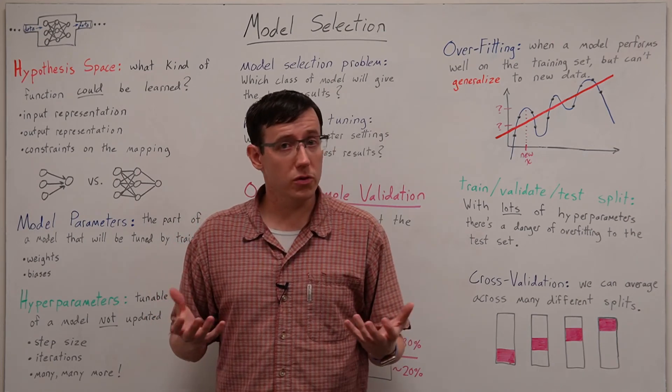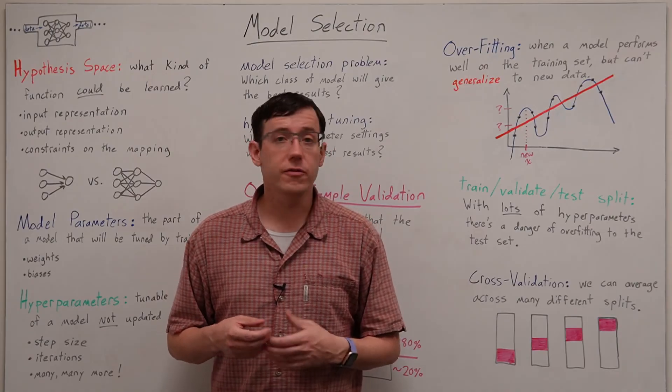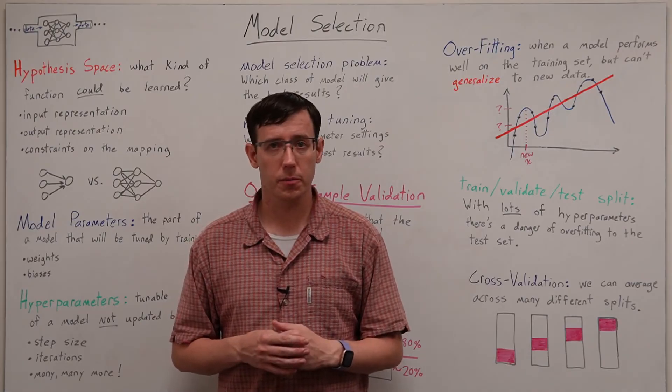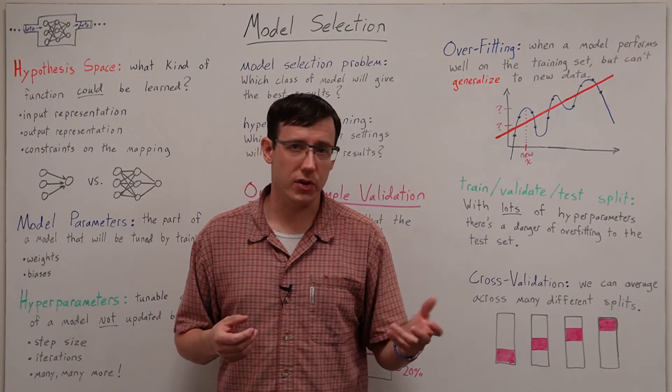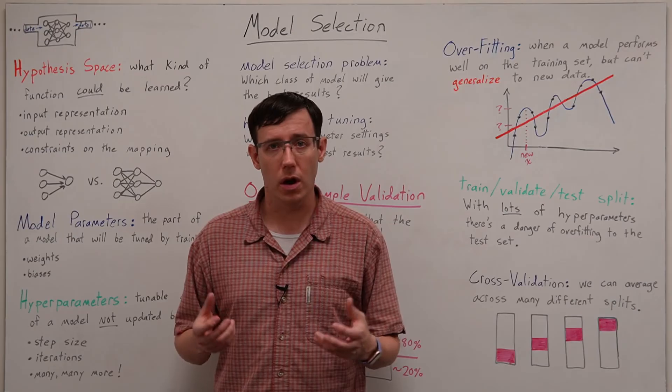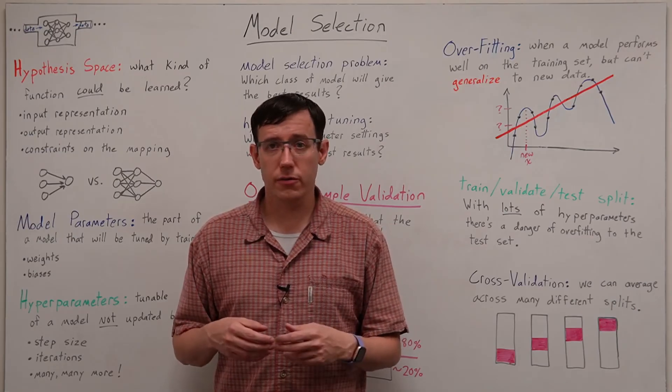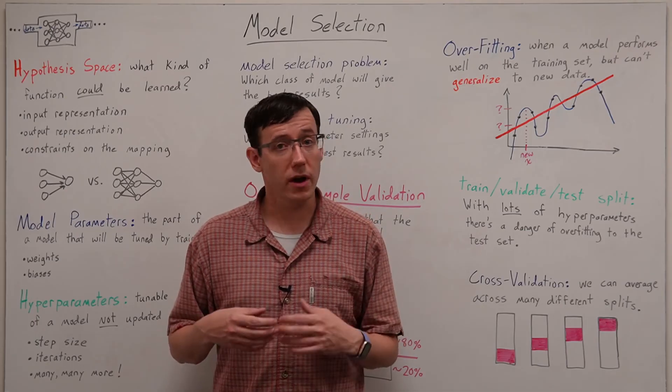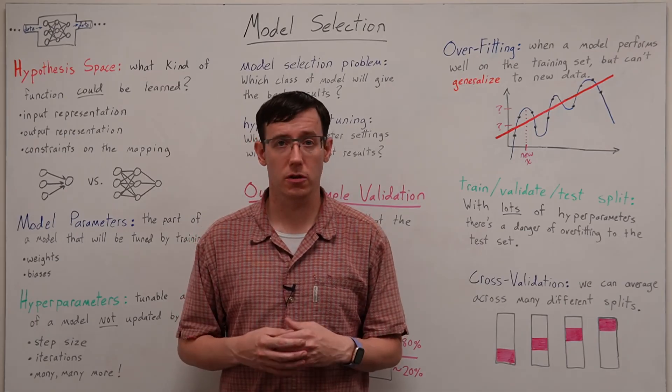So the approach that I recommend is to begin by figuring out the plausible range for each hyperparameter. Suppose that you started with a step size or learning rate of 0.01 but you're not sure if changing the learning rate is going to make a big difference. Well the first thing I would do is try some drastic changes to the learning rate.